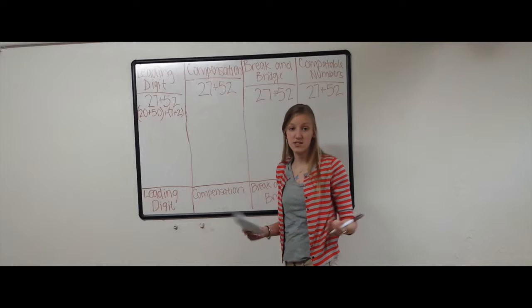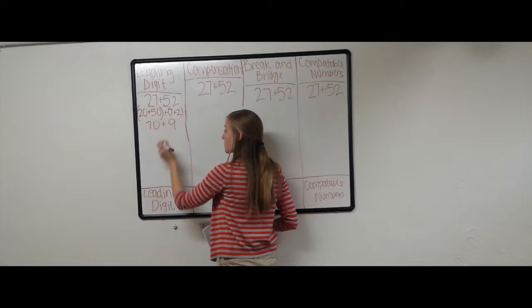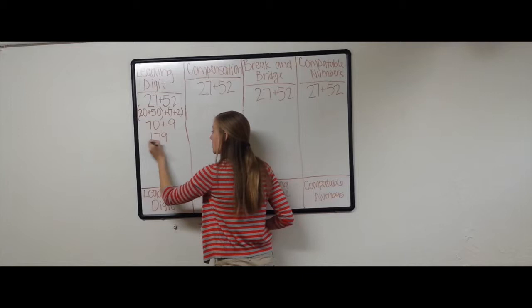So our final step is just to add. 20 plus 50 is 70. 7 plus 2 is 9. 70 plus 9 gives us our final answer of 79.